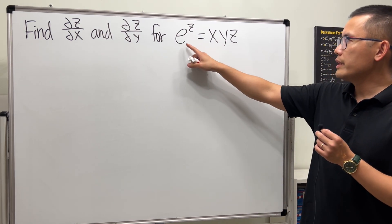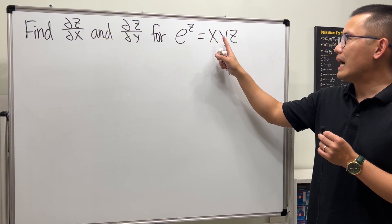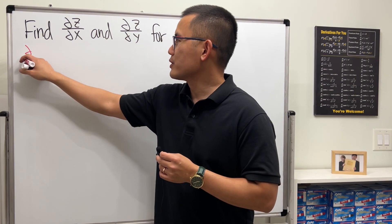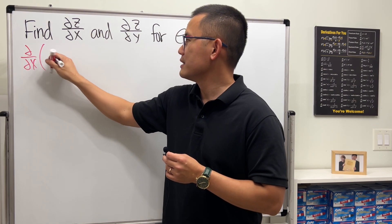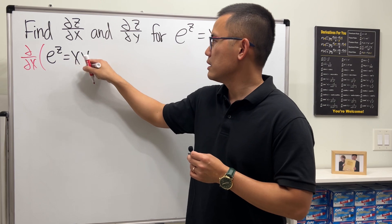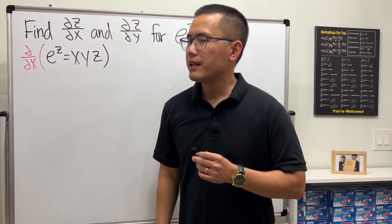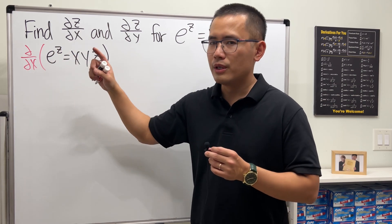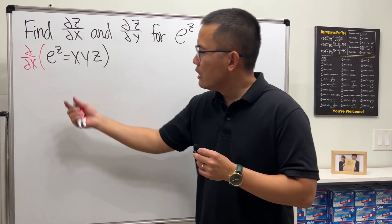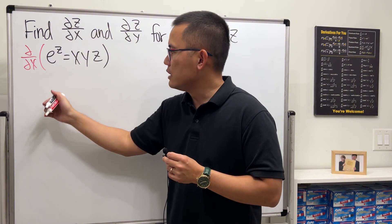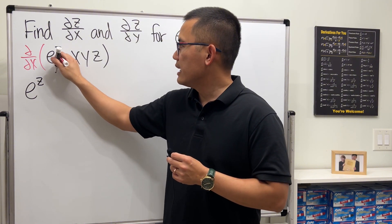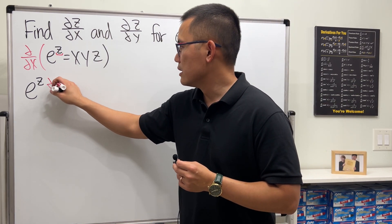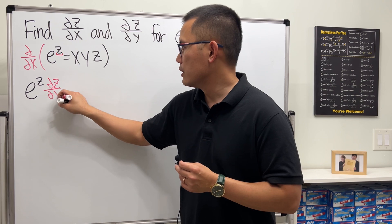For this one, it's a little bit trickier because not only do we have e to the z, but here we have x times y times z. Let's take the partial with respect to x first. Treat z as a function of x, so when we take the derivative of e to the z, we get e to the z and then use the chain rule — the derivative of z with respect to x. So we get the partial z with respect to x right here.